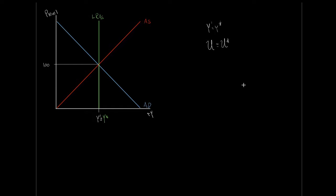From here, we're stable. There are no market forces acting on this model to push us one way or another. This is one of our theories of the business cycle: we have a stable economy that will stay right here at long-run equilibrium until a shock pushes us out. Our economy, generally speaking, is stable and happy. It will change year over year as productive capabilities increase, but in any given period, we stay at actual GDP equals potential GDP — outside of a shock.